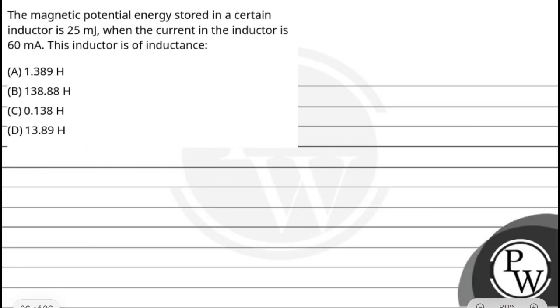are option A: 1.389 henry, B: 138.88 henry, C: 0.138 henry, D: 13.89 henry. The key concept is energy stored in an inductor.